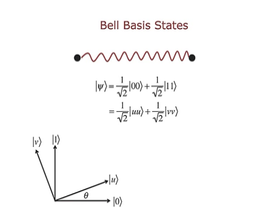Here's something more interesting. 0 and 1 are orthogonal states in a two-dimensional complex vector space — that's what quantum states are, linear superpositions that can be written as vectors. You could choose a different orthogonal basis — a rotated basis U, V — and that's a perfectly good basis. If you write out the state ψ in this U, V basis, it turns out that no matter which orthogonal basis you pick, the state looks like an equal superposition of |UU⟩ and |VV⟩.